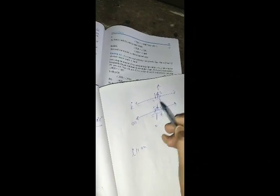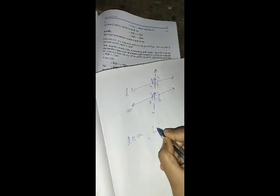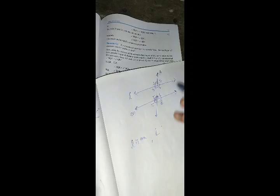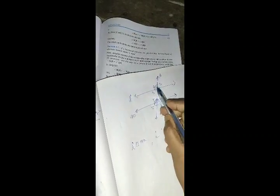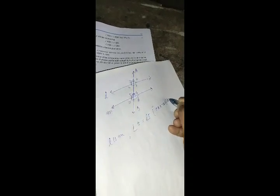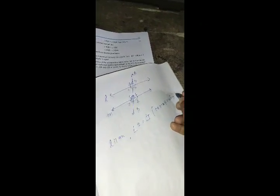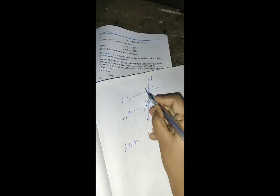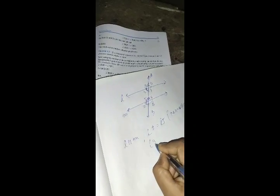If line L is parallel to line M, with angles 1 through 8, and this is a transversal, then angle 1 equals angle 5. These are corresponding angles. When we have parallel lines, corresponding angles are equal.